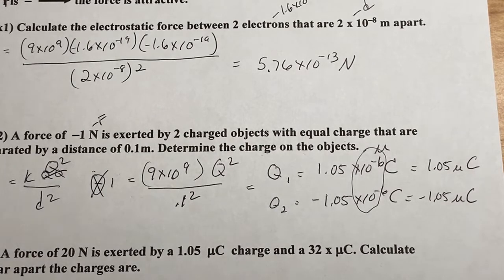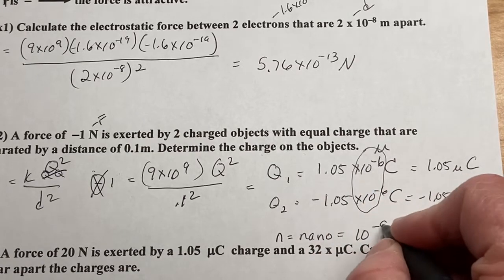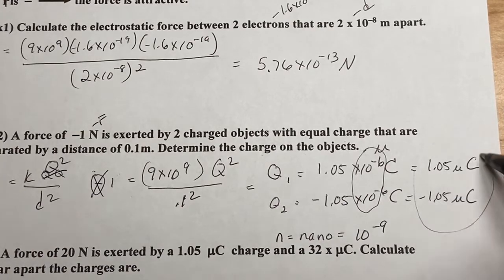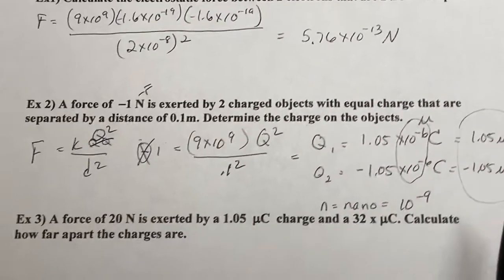Another one that you're going to run into is little n for nano. That one will happen. Remember that's 10 to the negative 9. So just for reference, many times they're given this way and not in terms of their charge. They'll have a prefix.